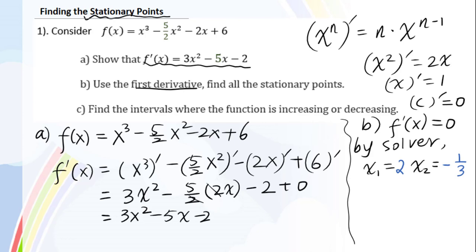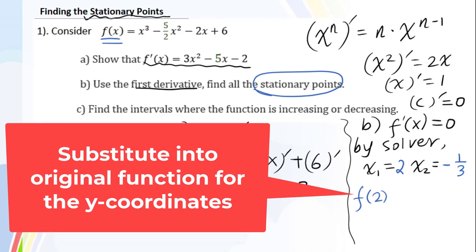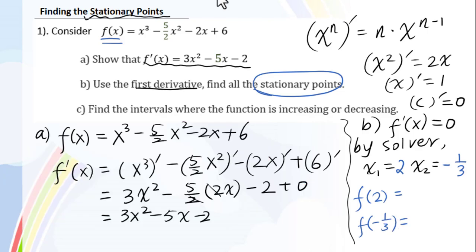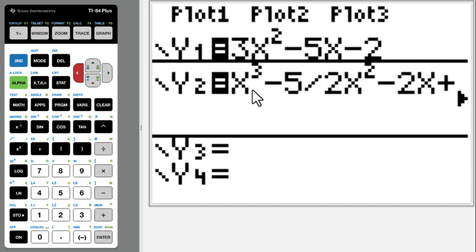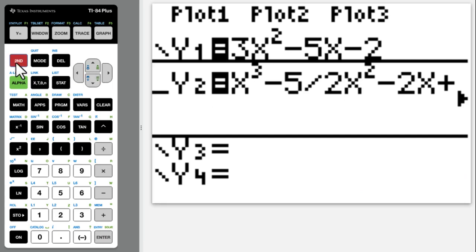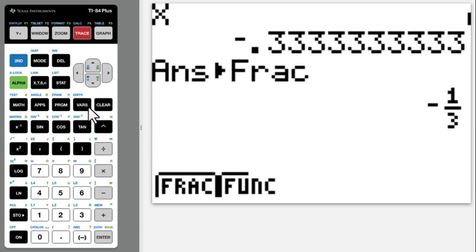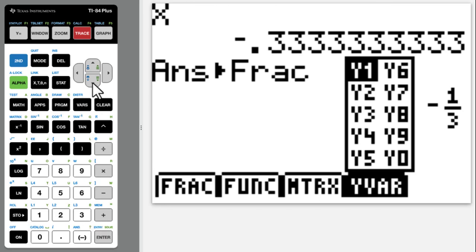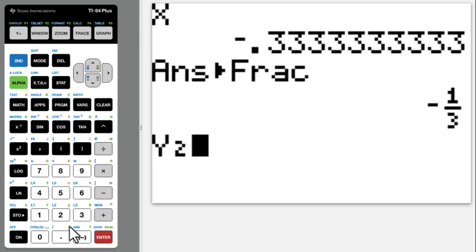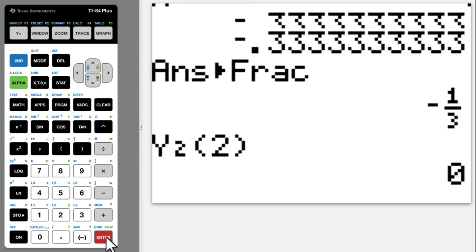We need to figure out stationary points. Go to calculator. We put f of x into y2, then quit. Alpha trace y2, do the substitution, enter.